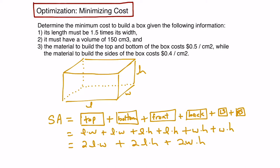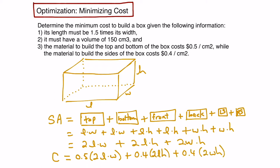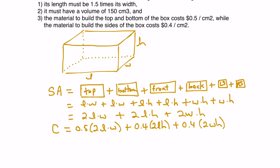Now let's build the cost function. The top and bottom cost 50 cents per square centimeter, so that contributes 0.5 times 2·L·W, which equals L·W. The sides — front, back, left, and right — cost 40 cents per square centimeter, giving 0.4 times 2·L·H plus 0.4 times 2·W·H, which simplifies to 0.8·L·H plus 0.8·W·H. So our cost function is C = L·W + 0.8·L·H + 0.8·W·H.